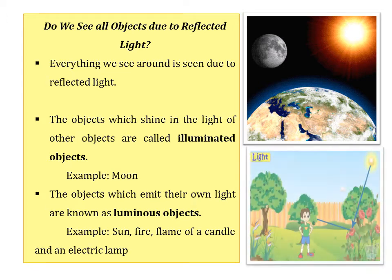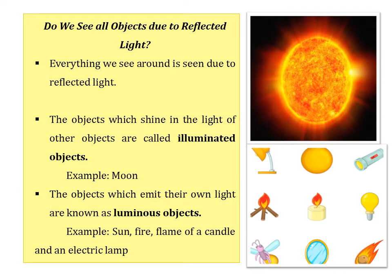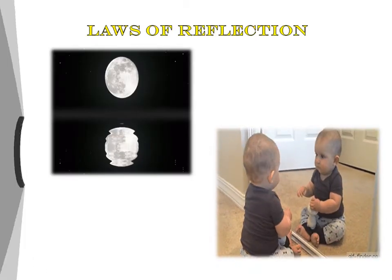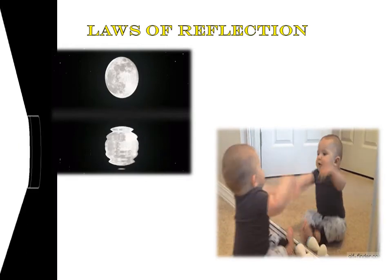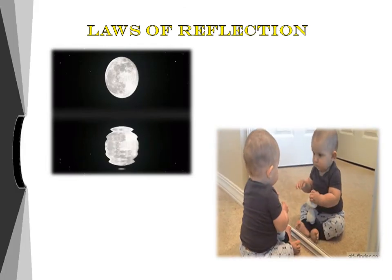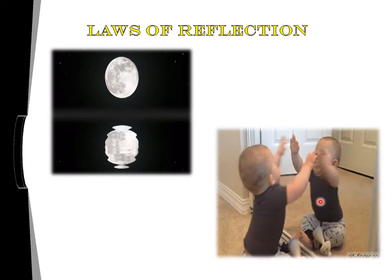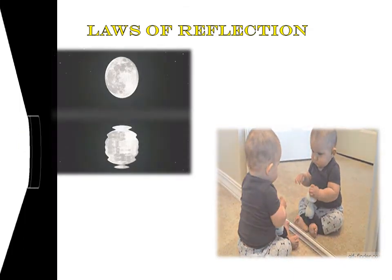Objects which shine in the light of other objects are called illuminated or non-luminous objects. They do not have their own light — they reflect light from other objects. For example, the moon receives light from the sun and reflects it, which is how we see the moon. Other non-luminous objects include plants, trees, and the ground. Objects which emit their own light are called luminous objects — for example, the sun, fire, flame of a candle, and electric lights.